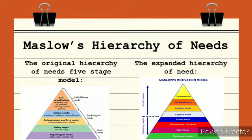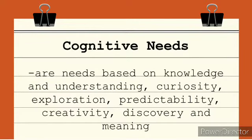Maslow's hierarchy of needs originally had five levels, but Maslow later extended and expanded it to give a place for cognitive needs. These cognitive needs are needs based on knowledge and understanding, curiosity, exploration, predictability, creativity, discovery, and meaning.